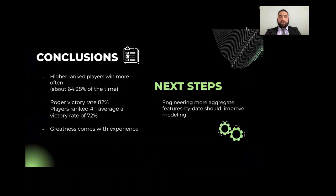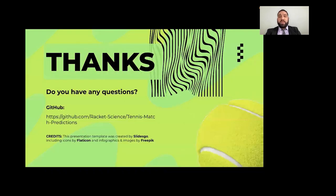Thanks, Chloe. In conclusion, high-ranked players will beat their opponent about 64 percent of the time, meaning greatness is tough to beat even for machine learning. Roger Federer is really great, with a winning record of 82 percent. Greatness comes from experience. In reality, age is not a key factor. With more time, we would like to engineer aggregated features by day to improve our modeling. Thank you very much, and I hope our time with you was insightful. Have a great day.